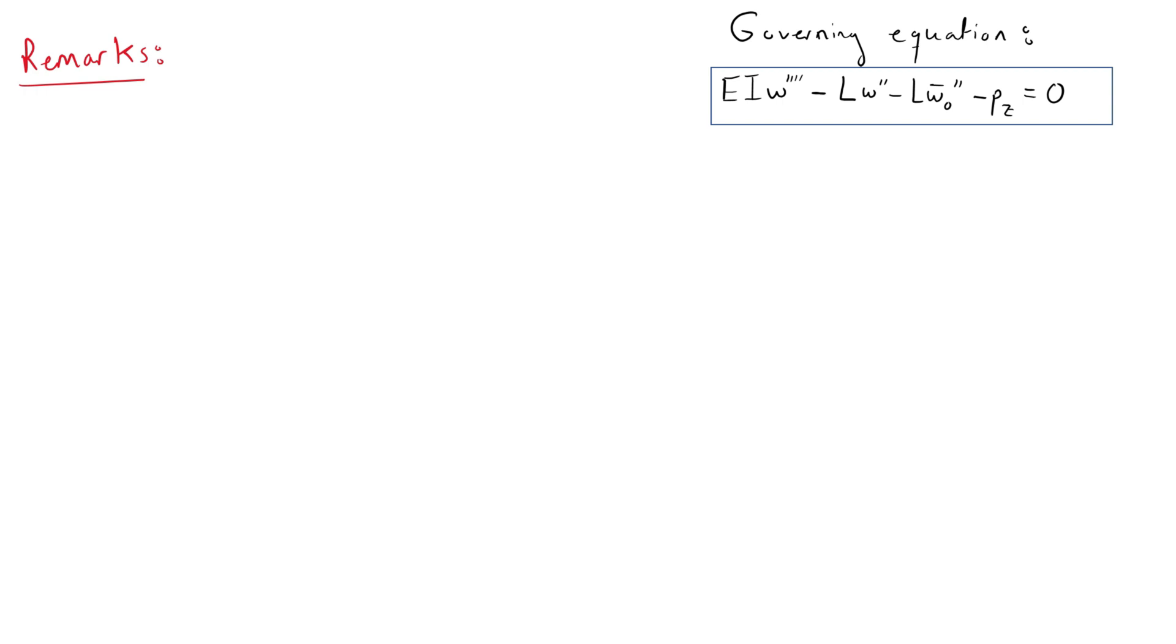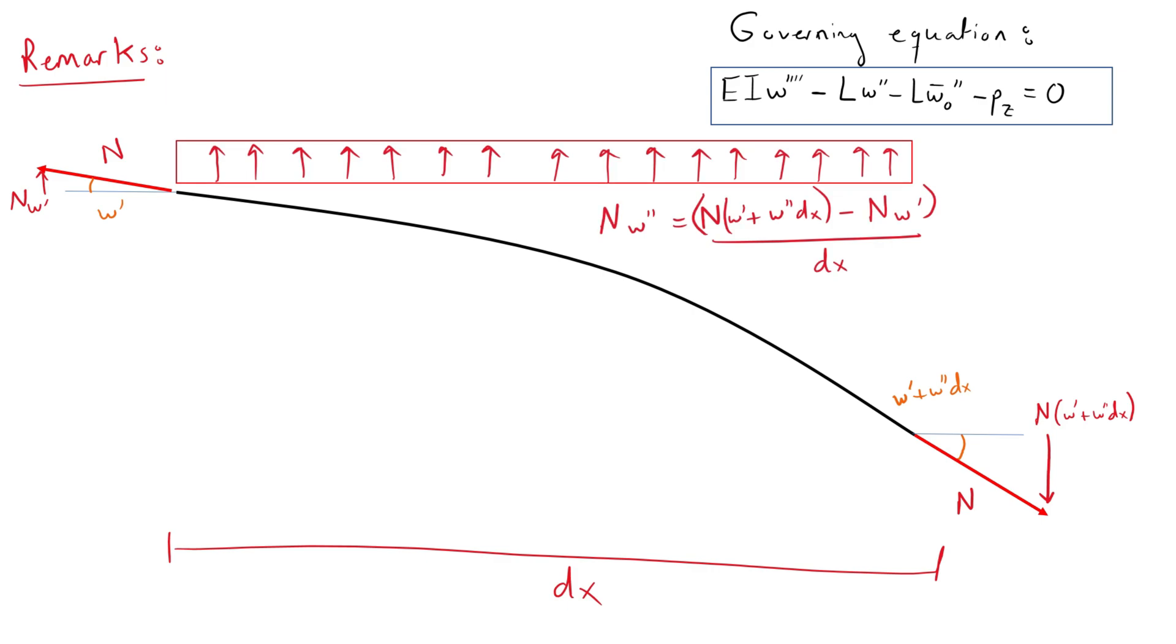We can visualize the destabilizing forces by looking at the deformed geometry. We can then resolve the vertical components of the normal forces. The difference between them over the length dx gives us the destabilizing forces due to second order theory.